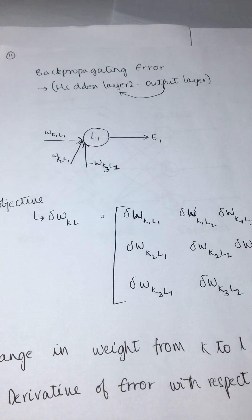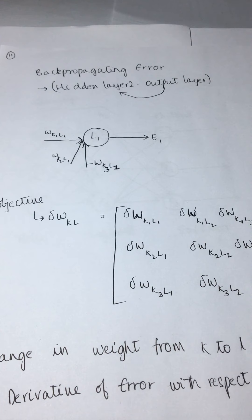Conceptually it is similar to your linear regression gradient descent calculations. For updating weights, what you basically used to do was take the old value minus learning rate into delta — that was your updated weight. In back propagation, almost literally the exact same thing happens. The only complex thing is you have a huge number of weights and gradients to calculate.